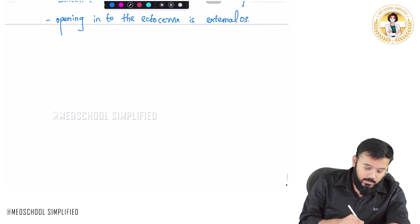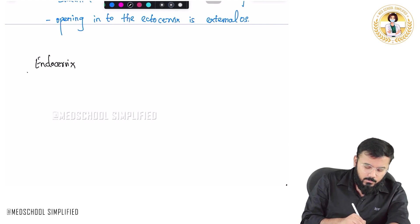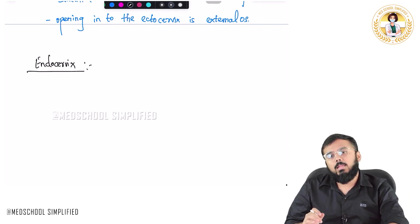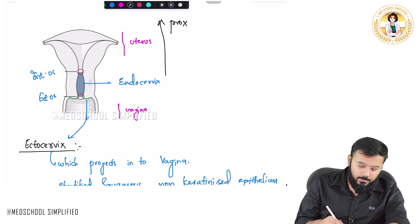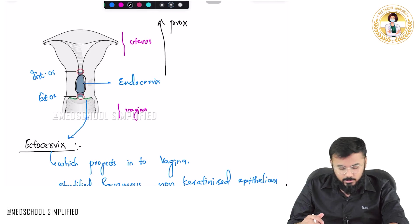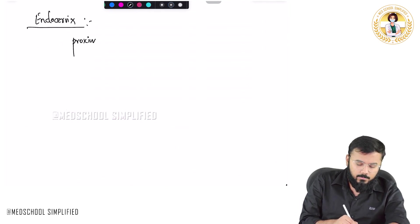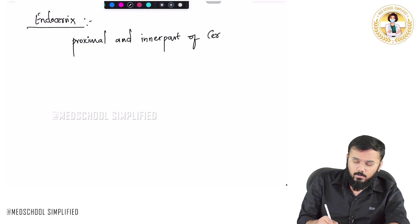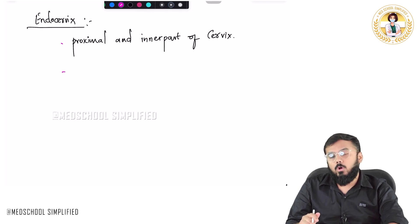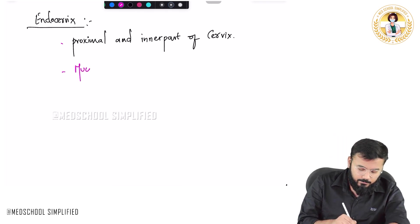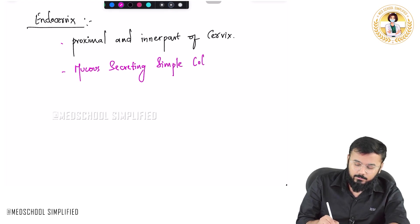Now, the next important thing is the endocervix. Endocervix is the proximal and inner part of the cervix. Here you can see, anything going above is called the proximal part, and the inner part of the cervix — this blue color portion — is called your endocervix. The epithelium over here is mucous secreting simple columnar epithelium.